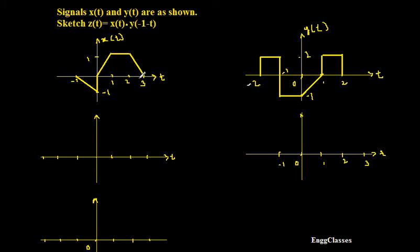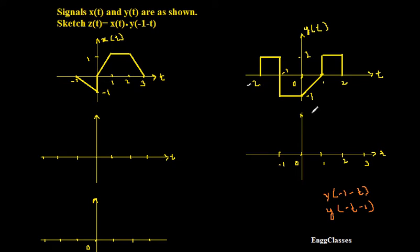First, let me sketch y(-1-t). We need to understand what operations are involved. I will rewrite y(-1-t) as y(-(t+1)), which means first there is a shift and then there is a reflection. So I have to first do the shifting operation then the reflection operation. Whatever signal I have, I will call it y(t-1) after shifting right by 1, then reflect to get y(-t-1), and finally multiply to get z(t).